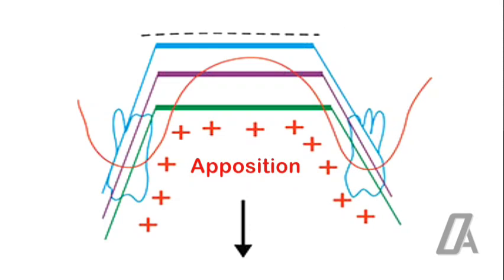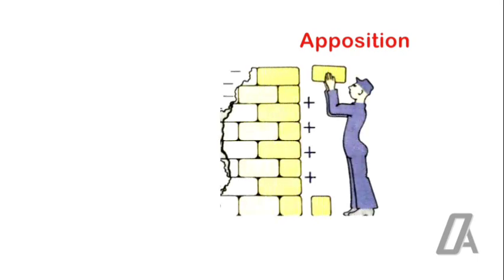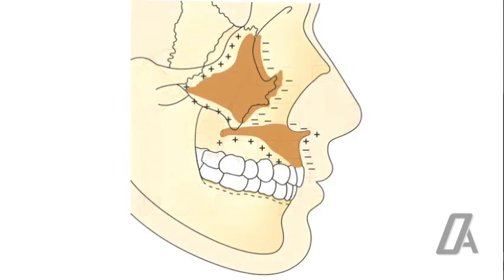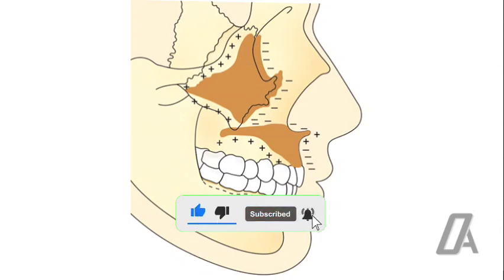The maxilla grows by two main processes: apposition and resorption. Apposition is the process where new bone is added. Picture it like adding bricks to a wall, layer by layer, to make it stronger and more robust. On the other hand, resorption is the process where existing bone is removed. It's like chiseling away at a sculpture to create a masterpiece. Together these two processes help shape the maxilla, giving it its unique form and function.